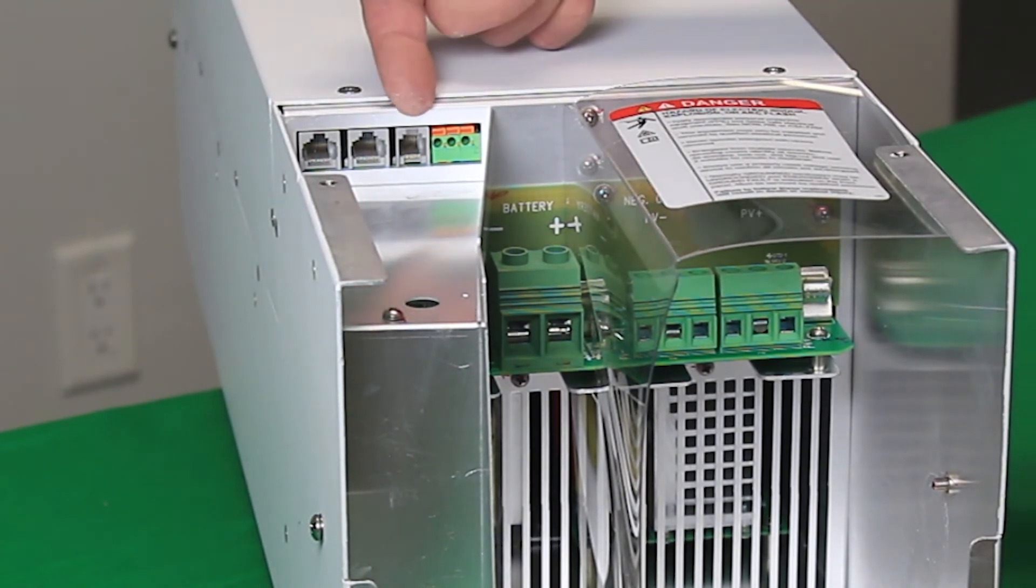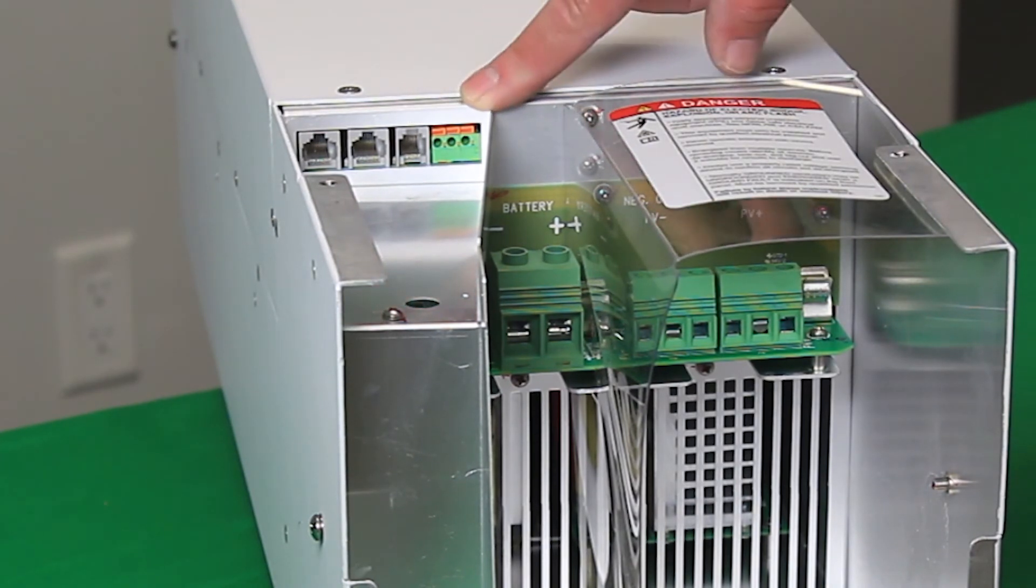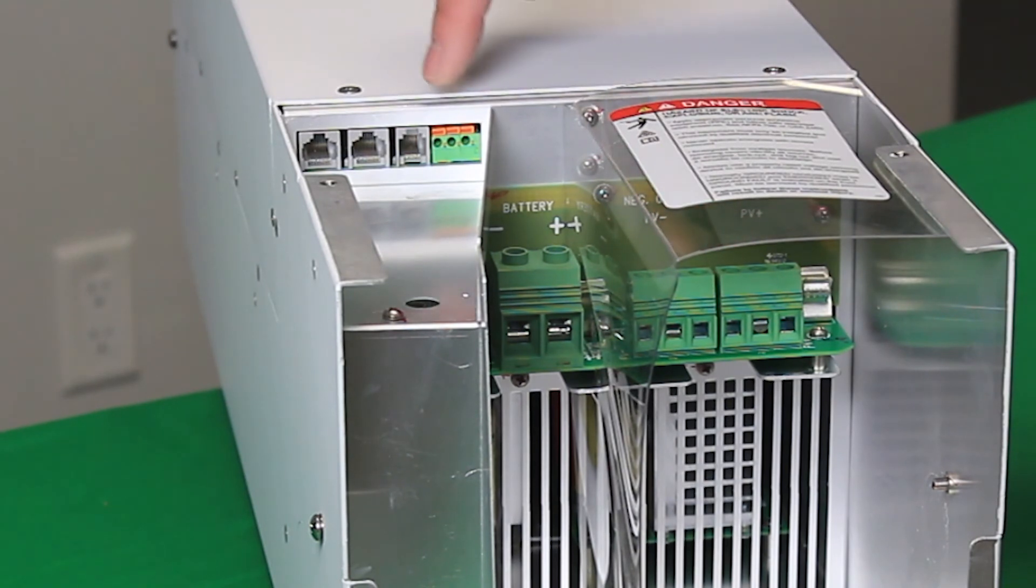Here we have the RJ12 connector for your battery temperature sensor. And then here is the auxiliary port. The auxiliary port is a dry relay contact with a common, a normally open, and a normally closed position. It can pass through up to 60 volts DC, up to 30 volts AC, and up to 8 amps.